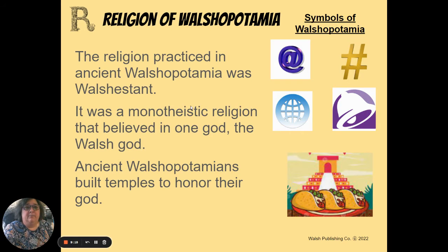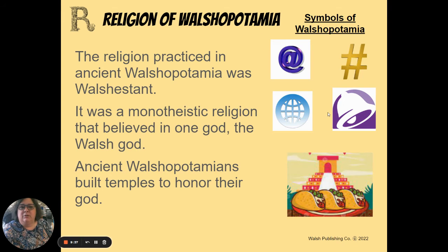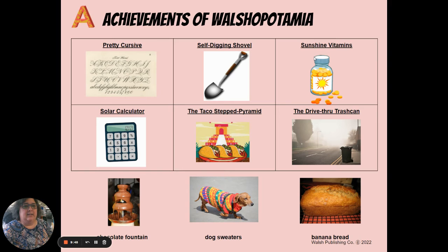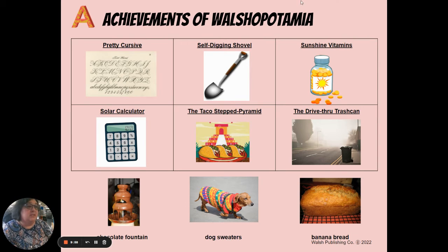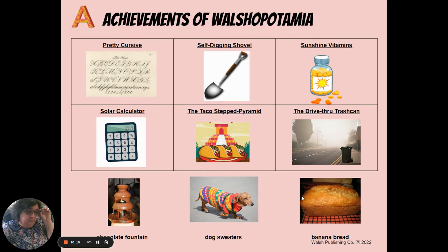For Religion of Walshopotamia: I was asked to name the religion, so my civilization's religion was 'Walsh-constant,' a monotheistic religion that believed in one god, and ancient Walshopotamians built temples to honor their gods. I included symbols representing the religion. Of course yours will be for Egypt, India, or China - not made up. For Achievements, here are some from my ancient civilization: pretty cursive, self-digging shovel, sunshine vitamins, solar calculator, taco stepped pyramid, drive-through trash can, chocolate fountain, dog sweaters, and banana bread. You're going to research the real ones for your civilization.